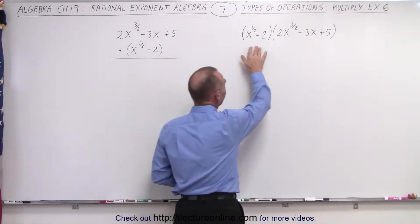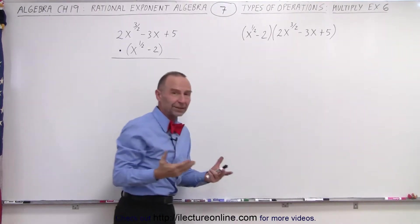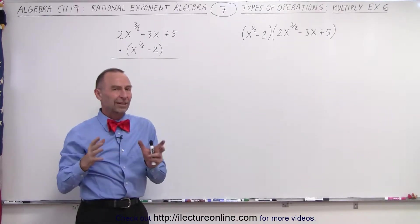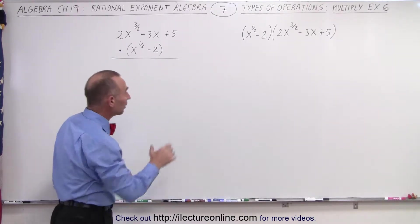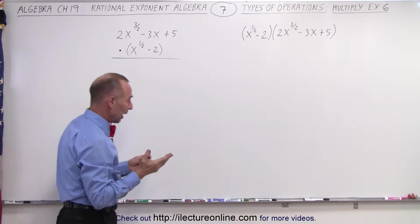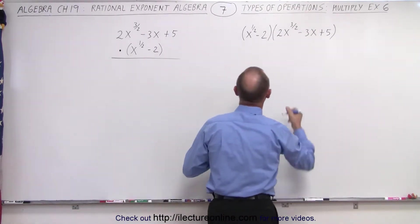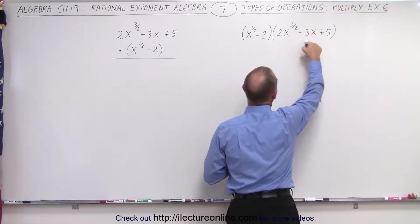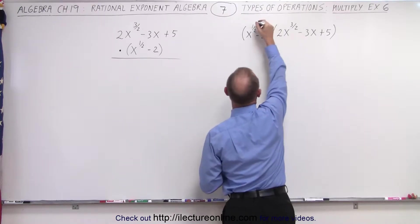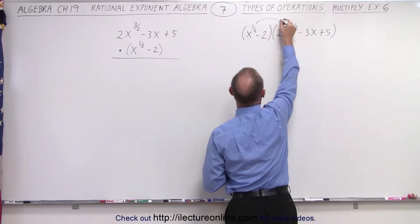We have a binomial multiplied times a trinomial, so when we multiply it together, we're going to end up with six terms. We can either work it out the way we normally work it out, and when we say that, we mean that we take the first term and multiply it times each of the terms in the second binomial, or the second trinomial, I should say.